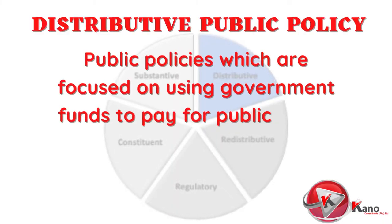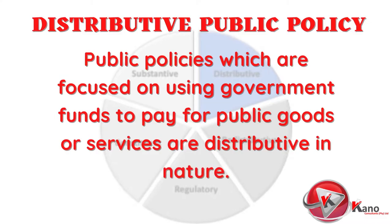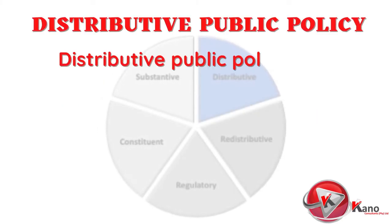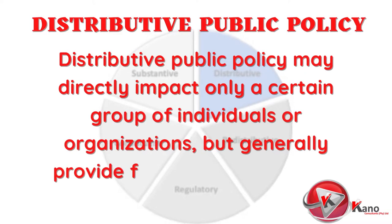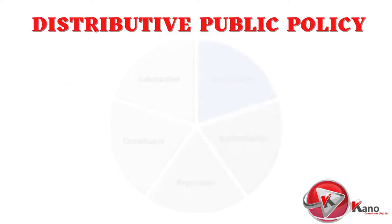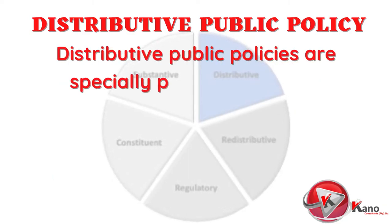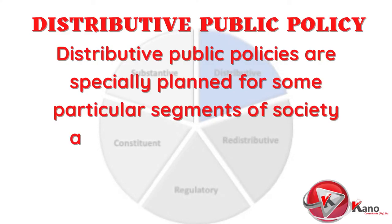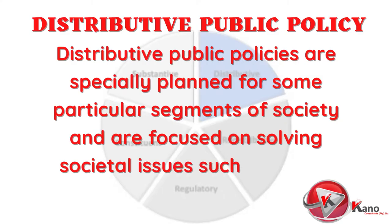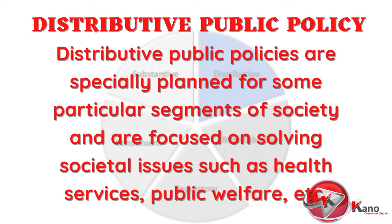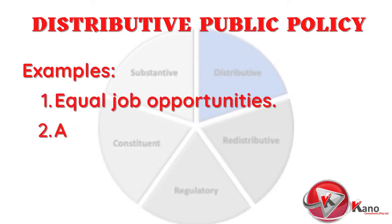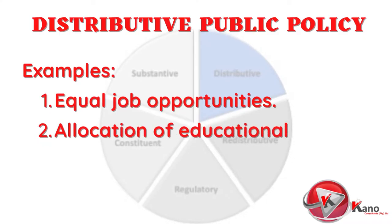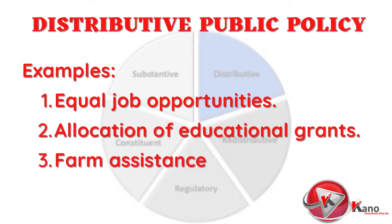Public policies which are focused on using government funds to pay for public goods or services are distributive in nature. A distributive public policy may directly impact only a certain group of individuals or organizations, but generally provides for the common good. These policies are specially planned for a particular segment of society and are focused on solving societal issues such as health services and public welfare. Examples include equal job opportunities, allocation of educational grants, and farm assistance programs.